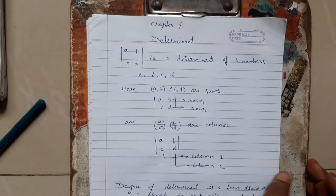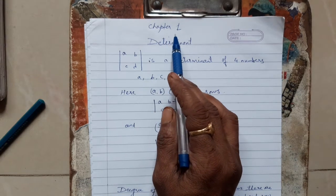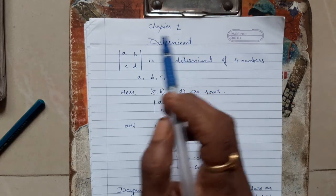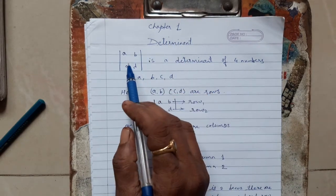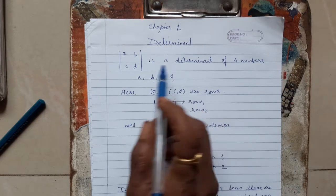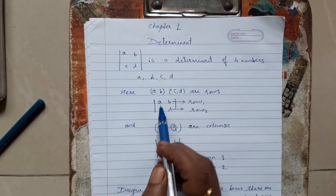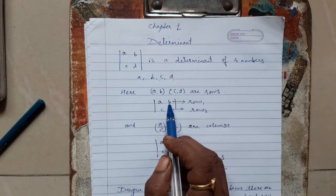Students, now we are going to see determinant from your chapter linear equations in two variables. What is a determinant? See how these numbers are arranged. If a, b, c, d are four numbers, then the determinant is written as a b c d. Here a and b are numbers in